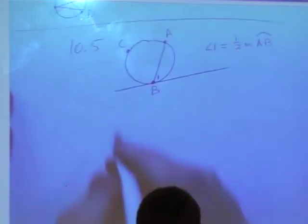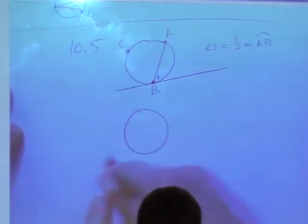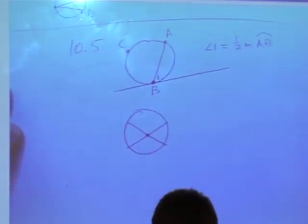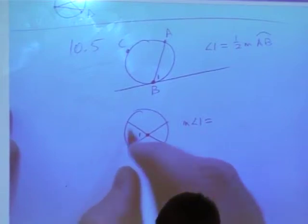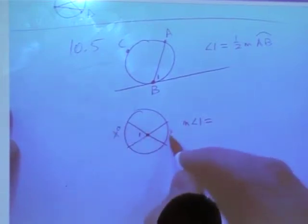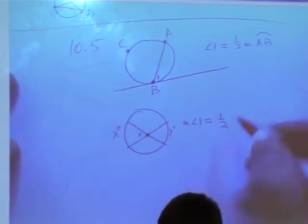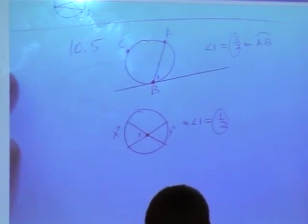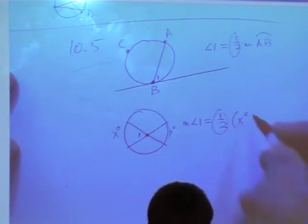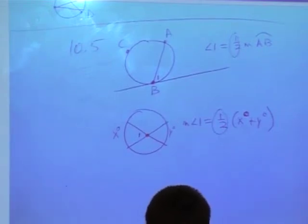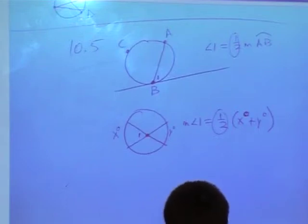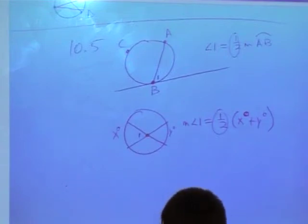The second one. We have a circle, and the intersection of two chords is inside. It doesn't have to be in the center. Notice this is not exactly in the center. If they intersect inside the circle, here's how you do this. The measure of angle 1 is equal to, we'll call this x degrees and y degrees here. The measure of angle 1 is equal to one half. Here's the one half again. Notice we have one half all the time. One half of the angle x and angle y added together. Those two arcs are added together. But then you have to take half of it, after you add the two arcs.